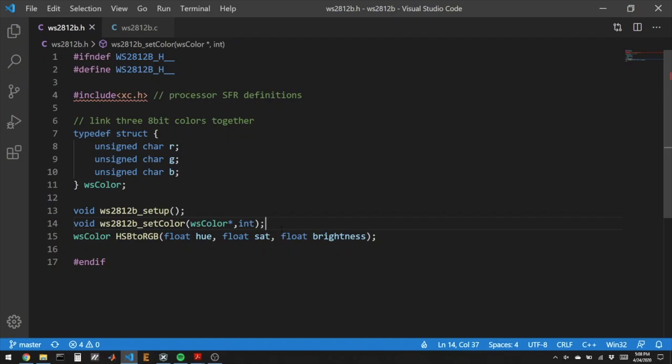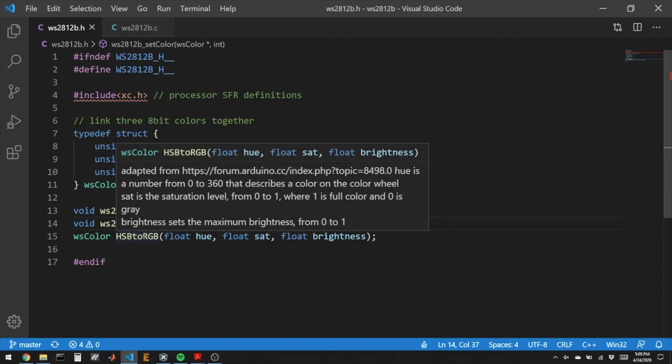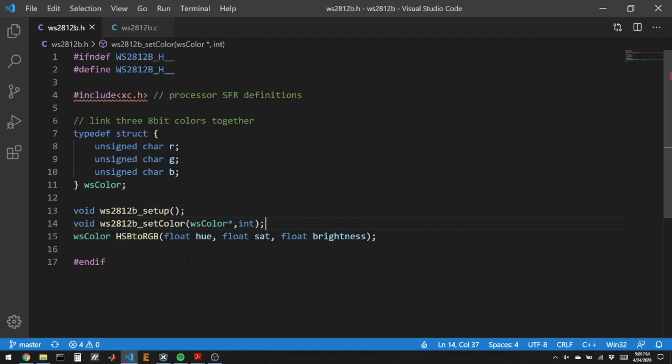To make the fancy rainbow array that I demonstrated earlier, I wrote this function, hue, saturation, brightness to RGB value. We'll use that at the end.